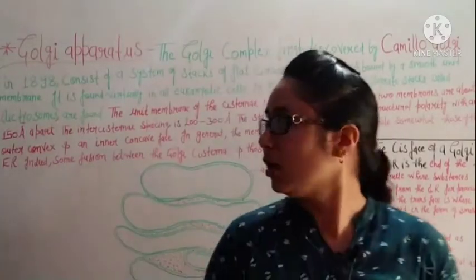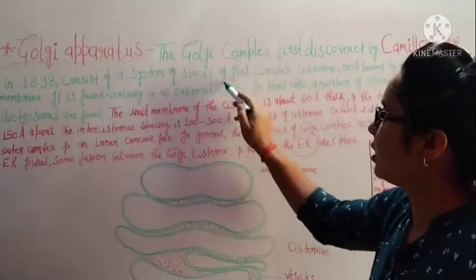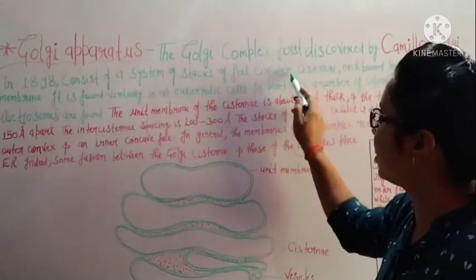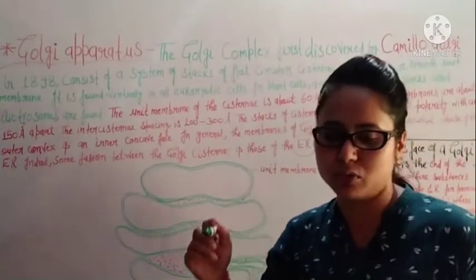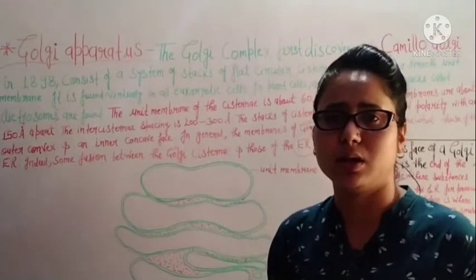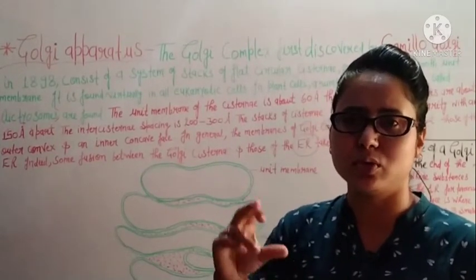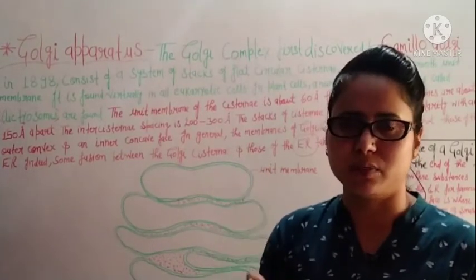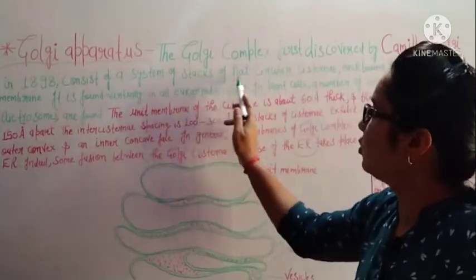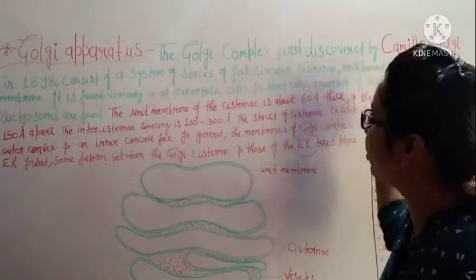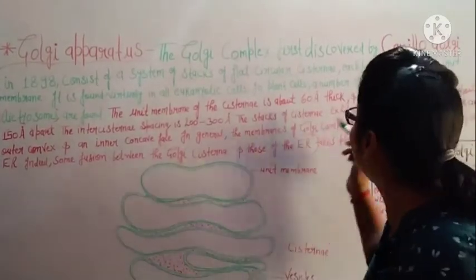Each cisterna is bound by a smooth unit membrane. The cisternae are circular and flat and arranged in stacks — just like stacking coins one on top of another. That is the kind of structure we see here: stacks of flat circular cisternae, each bound by a smooth unit membrane.